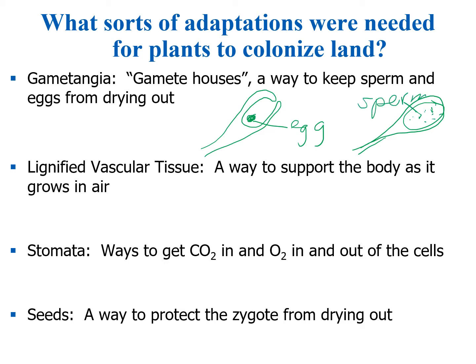Sperm and eggs are called gametes, so these are the gamete houses that protect the sperm and eggs from drying out. Another major adaptation was lignified vascular tissue — this is a way to support the body as it grows in air. Another major structure is stomata, which actually evolved early on, even before lignified tissue. Stomata are like little mouths and they help get carbon dioxide and oxygen in and out of the leaves.